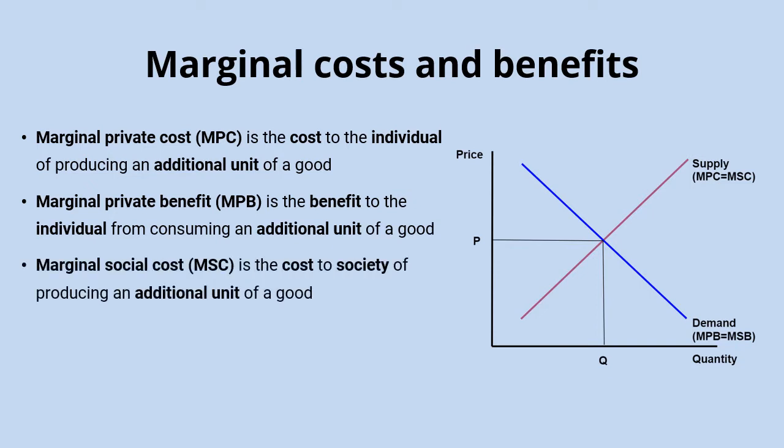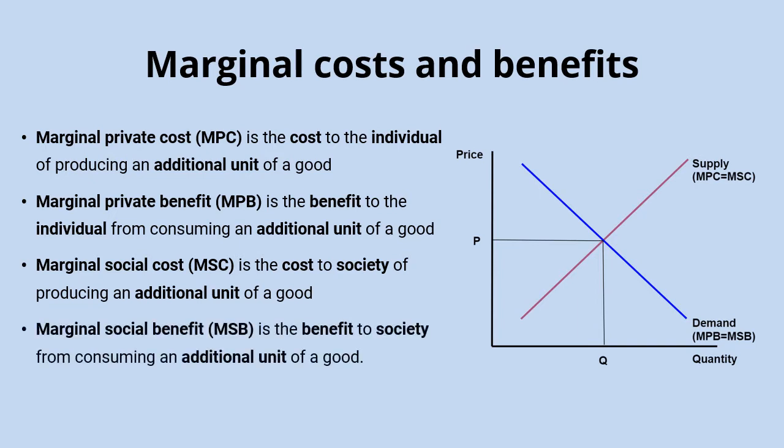Then we have the social side of things as well. When we look at marginal social costs, we're talking about the whole cost to wider society of producing an additional unit of a good. That will include all of those marginal private costs, but it will also include the externality — the external costs, those costs that are imposed on third parties. You add those together to get the full marginal social cost. The marginal social benefit is the benefit to society from consuming an additional unit of a good. That will include the marginal private benefits, but also those external benefits, those externality effects on third parties, added together to make the marginal social benefit.